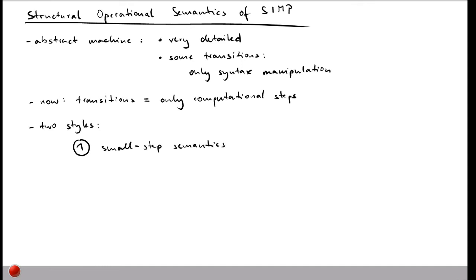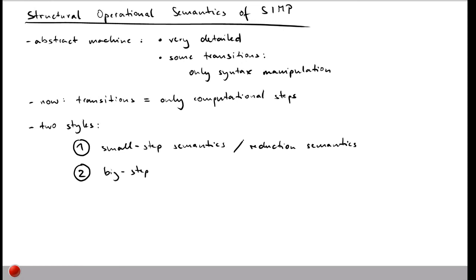Small step semantics is sometimes also called reduction semantics, so now you know that term if you see it elsewhere. The second style of structural operational semantics we'll look at here will be big step semantics, which is sometimes also called evaluation semantics.